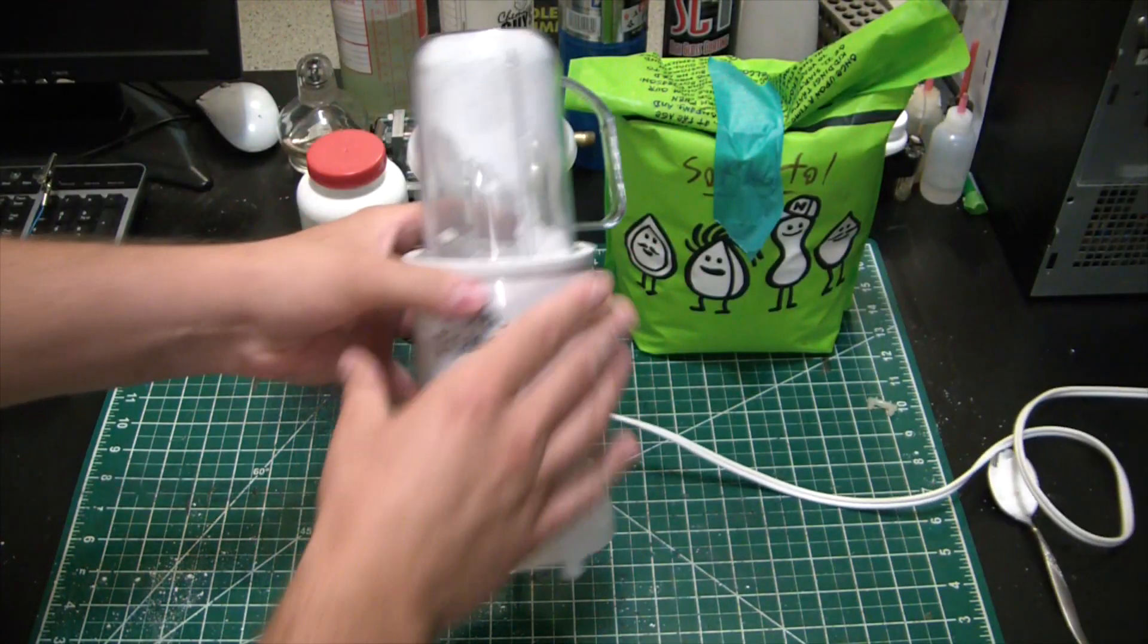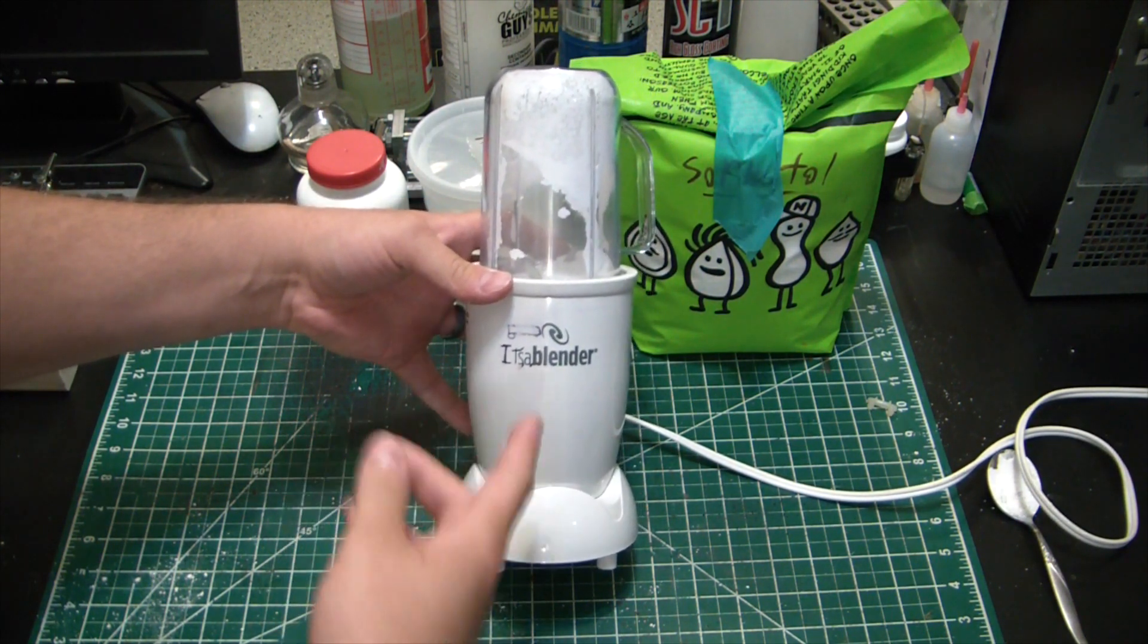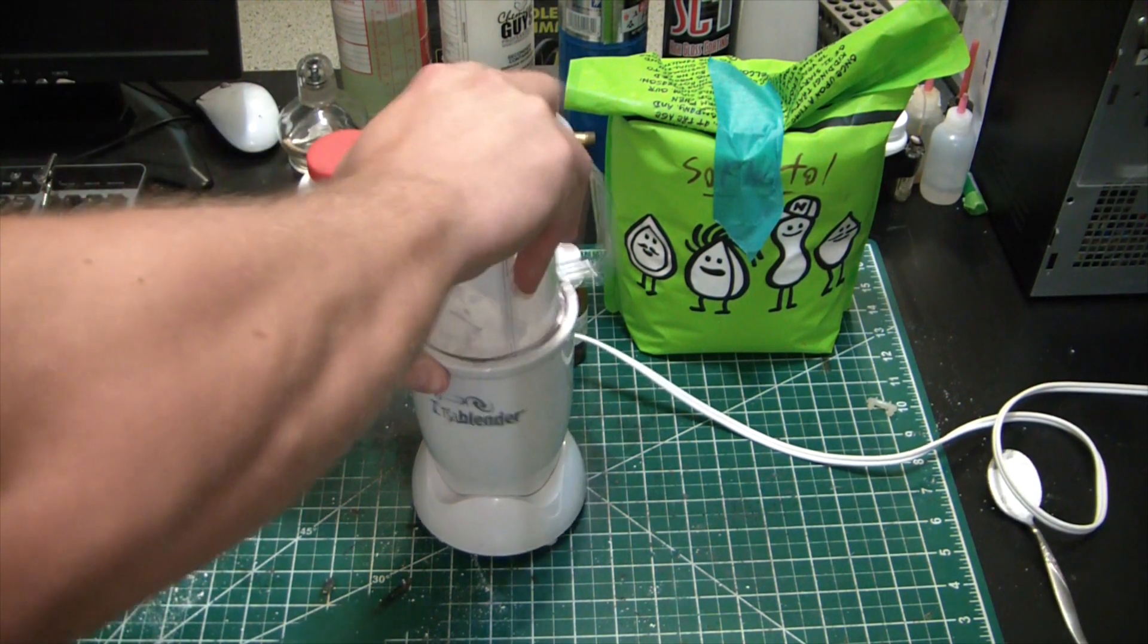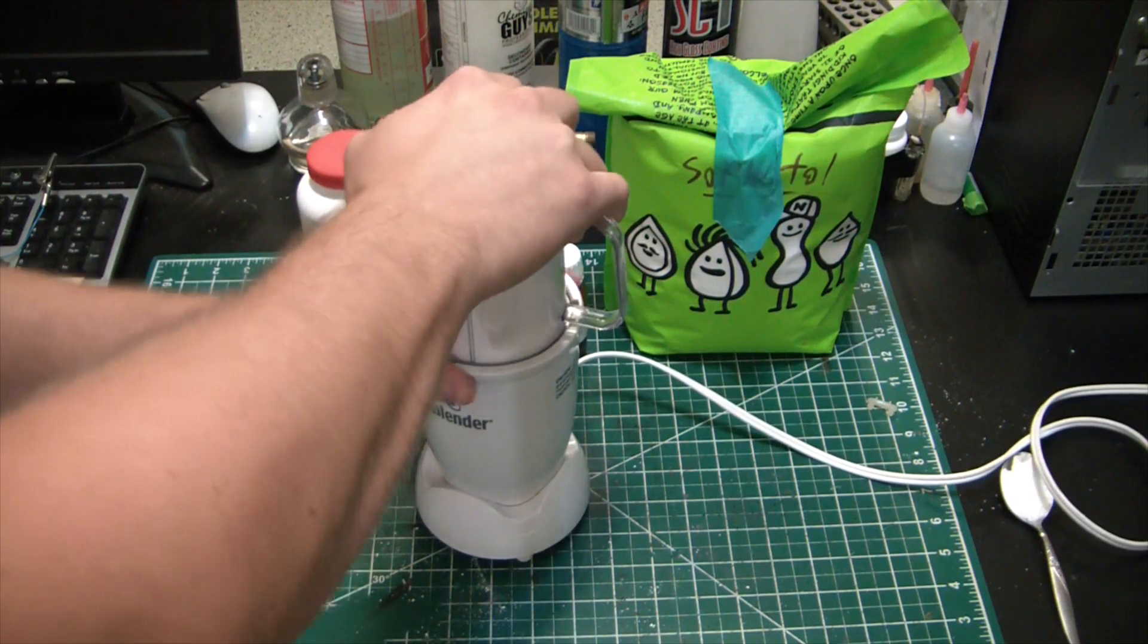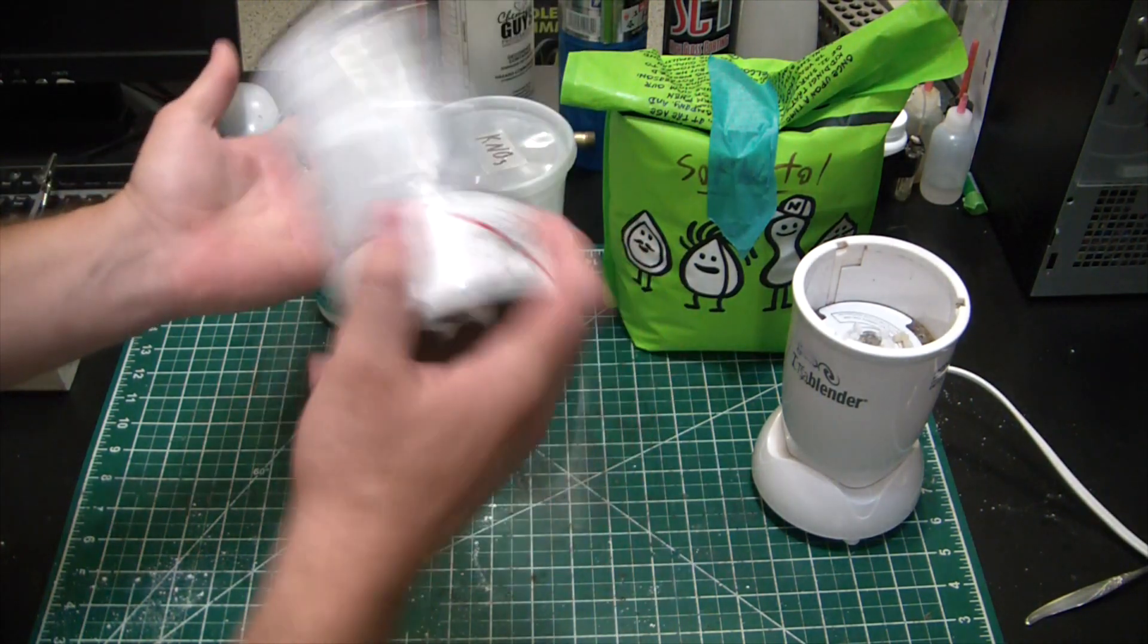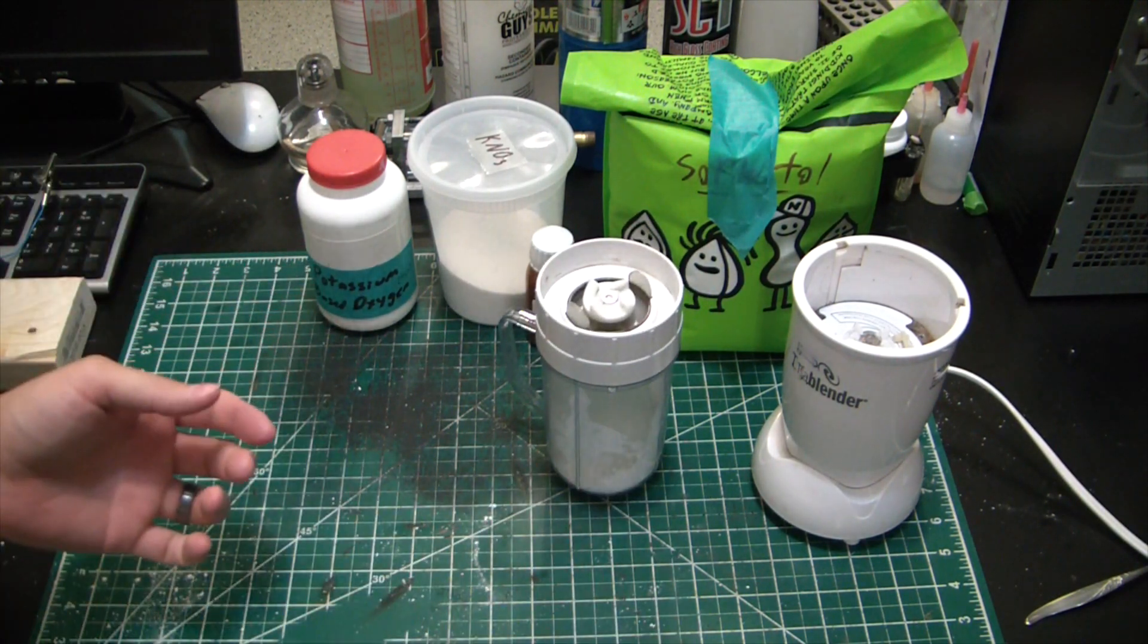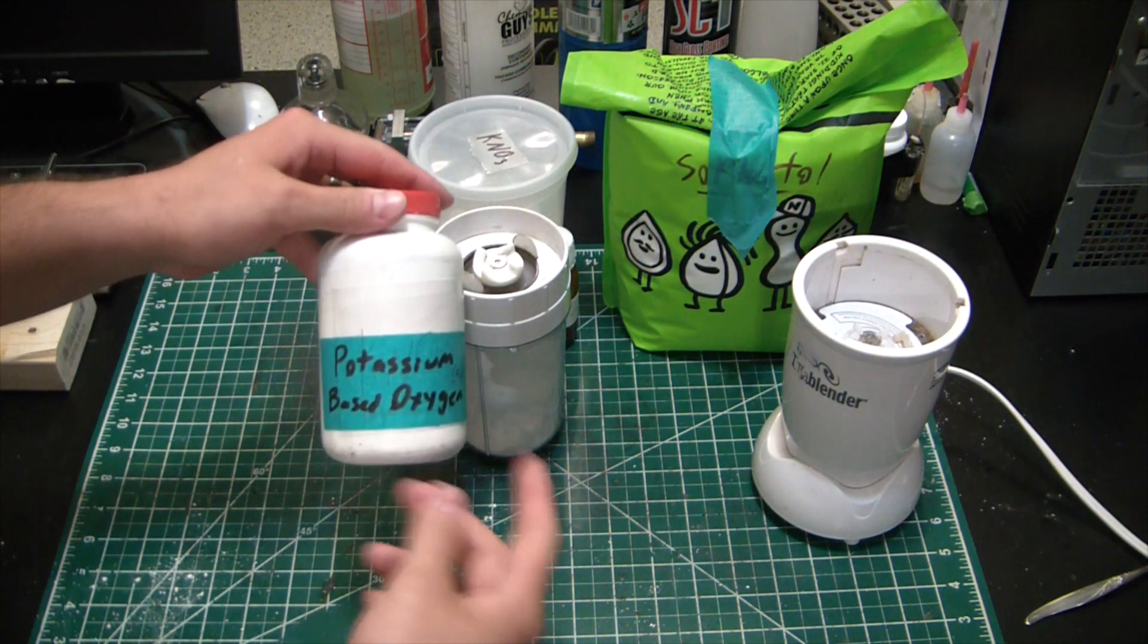First step, you need to powder the mystery ingredient. I've got this blender from a thrift shop. We need to powder this stuff. You can see there's tons of particles floating around in the air. You're going for powdered sugar consistency, super high surface area.